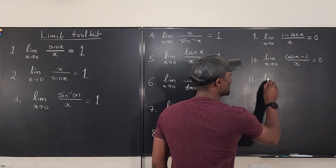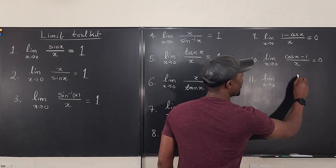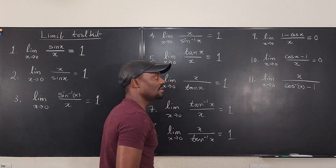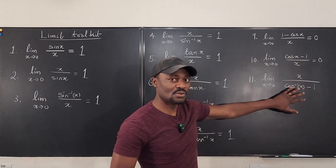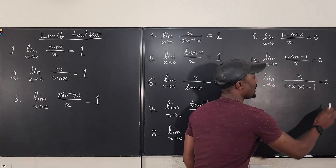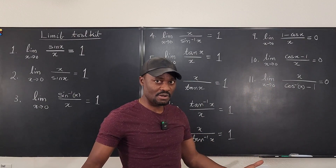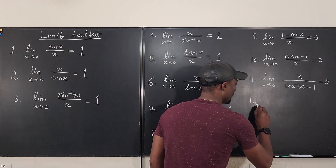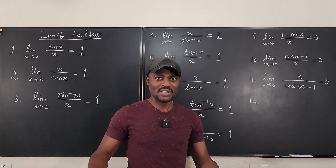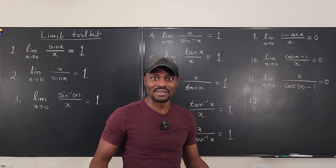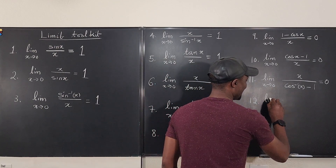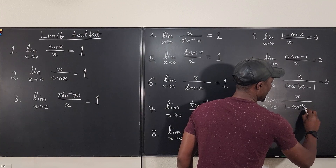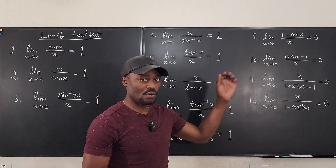And the last one is the limit as x goes to zero of x over inverse cosine of x minus one, which equals zero. You cannot flip these ones — flipping would make it undefined. The reason we could flip the earlier ones is because the graph is still defined there. Number twelve is the limit as x goes to zero of x over one minus inverse cosine of x, also equal to zero. So there are four zeros and eight ones.